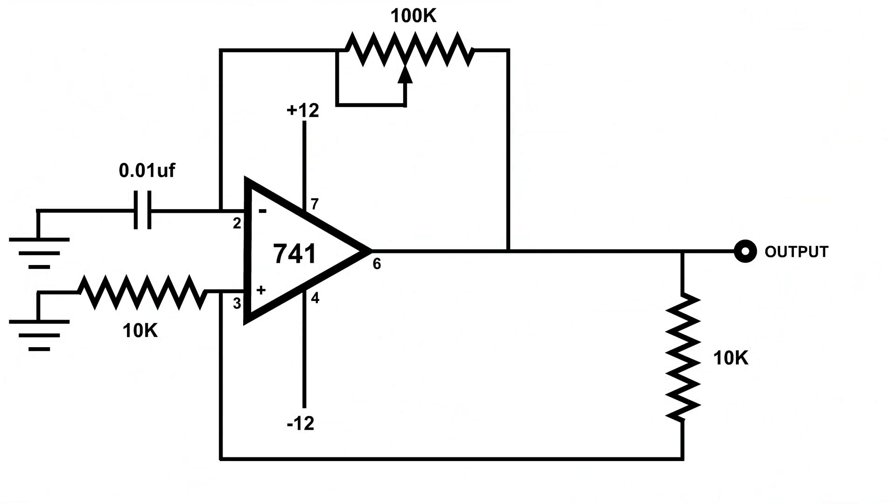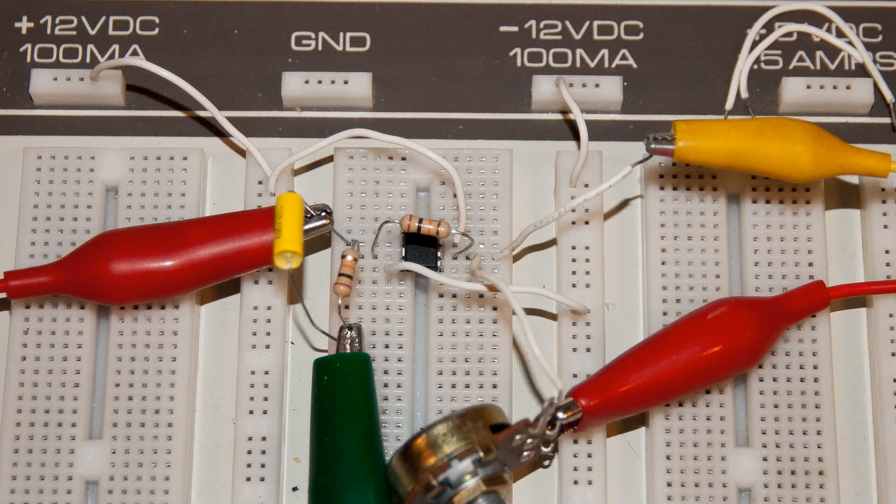This is the third circuit I built, and it is a multivibrator. And you can vary the frequency by changing the variable resistor, that 100k variable resistor. And this is the circuit on the breadboard.